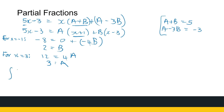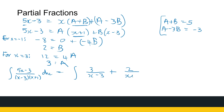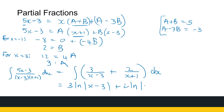Now let's get back to our integral. We want to find the integral of (5x minus 3) divided by (x minus 3)(x plus 1) dx. That's the same as the integral of 3 over (x minus 3) plus 2 over (x plus 1) dx. These we can integrate very easily: the result is 3 ln|x minus 3| plus 2 ln|x plus 1| plus C. The hard work is not in the integration — the hard work is in writing it as a partial fraction. The integration itself is only one or two steps.